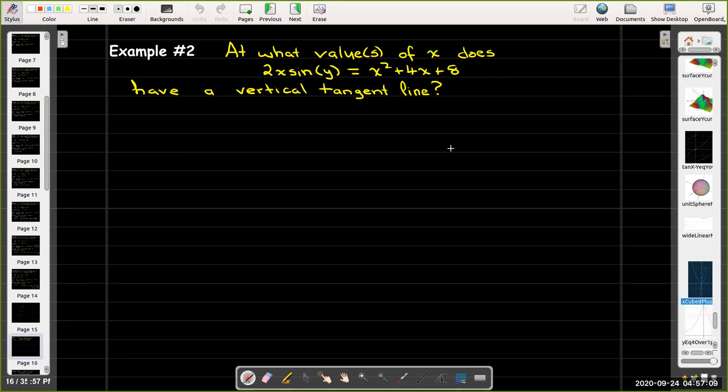What values of x does the curve 2x sin(y) = x² + 4x + 8 have a vertical tangent line? So we'll take the same strategy. We'll go ahead and differentiate with respect to y. On the left hand side, I have a product, so I'm going to use the product rule. So I'll get 2 dx/dy times sin(y) plus 2x cos(y) equals, now I'm differentiating with respect to y, so x² I need to use the chain rule with x² and with 4x. The derivative of a constant is always 0. So I'll get 2x dx/dy plus 4 times dx/dy.